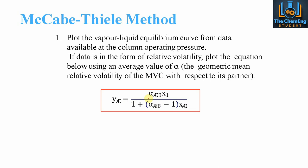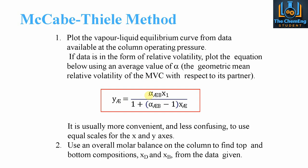We then use an overall mole balance on the column to find the top and bottom compositions xd and xb. We do a mass balance on the distillation column — with our feed coming in, our top product, and our bottom product — which gives us the compositions of the top and bottom streams. We can also determine the composition of the feed, which is very important for solving the McCabe-Thiele method.